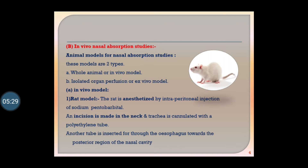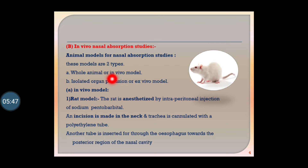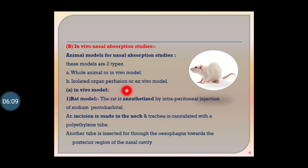The second technique is the in vivo nasal absorption study. For in vivo nasal absorption study, animal models are used, which are of two types: first, whole animal in vivo models, and second, isolated organ perfusion and ex vivo models.